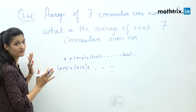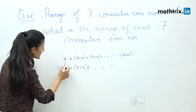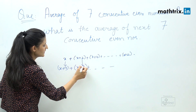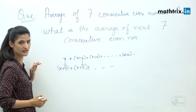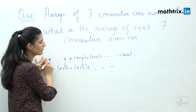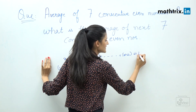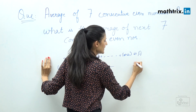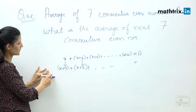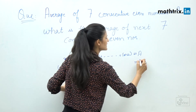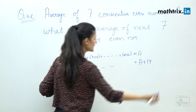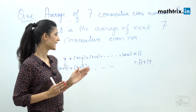Every time, each number is increasing by 14. That means if the average of the first seven consecutive even numbers is a, then the average of the next seven consecutive even numbers is nothing but a plus 14.